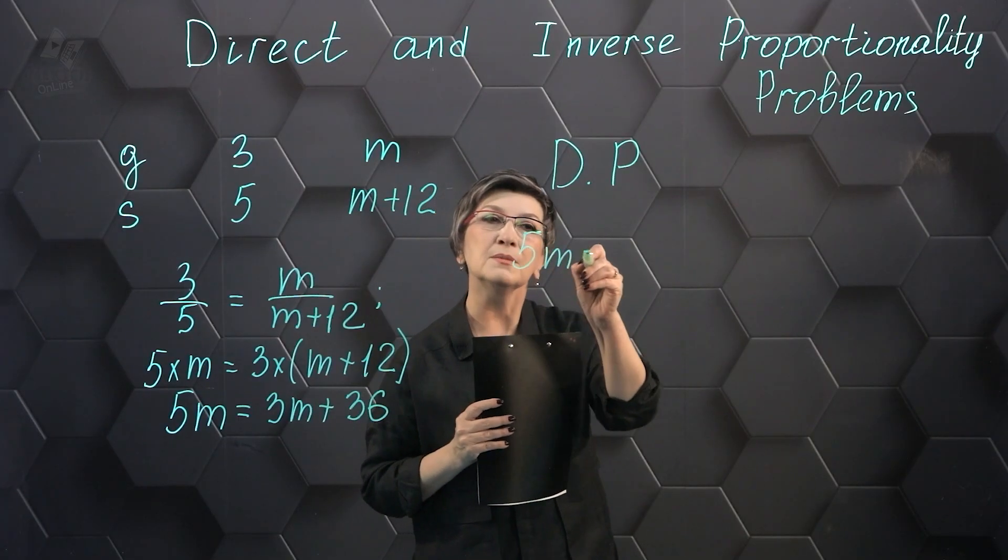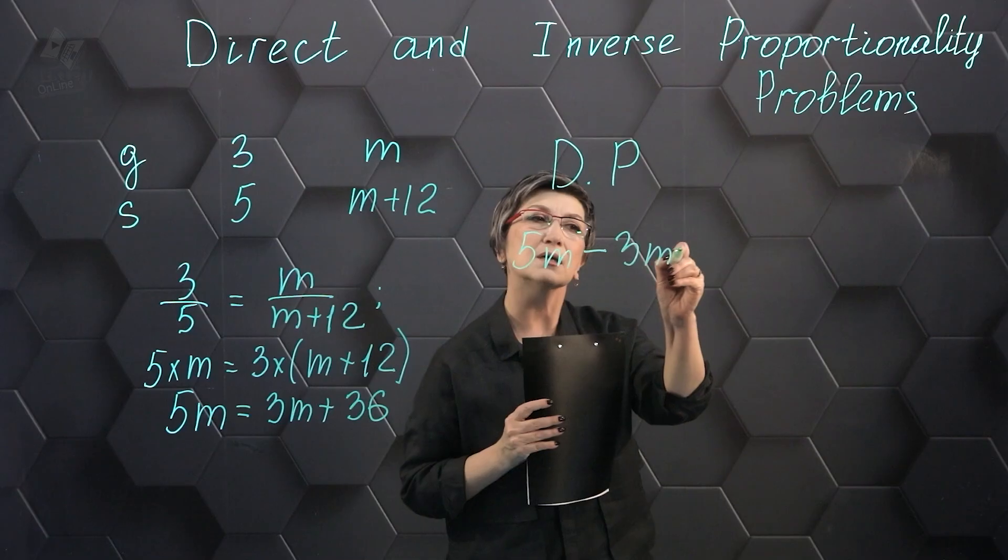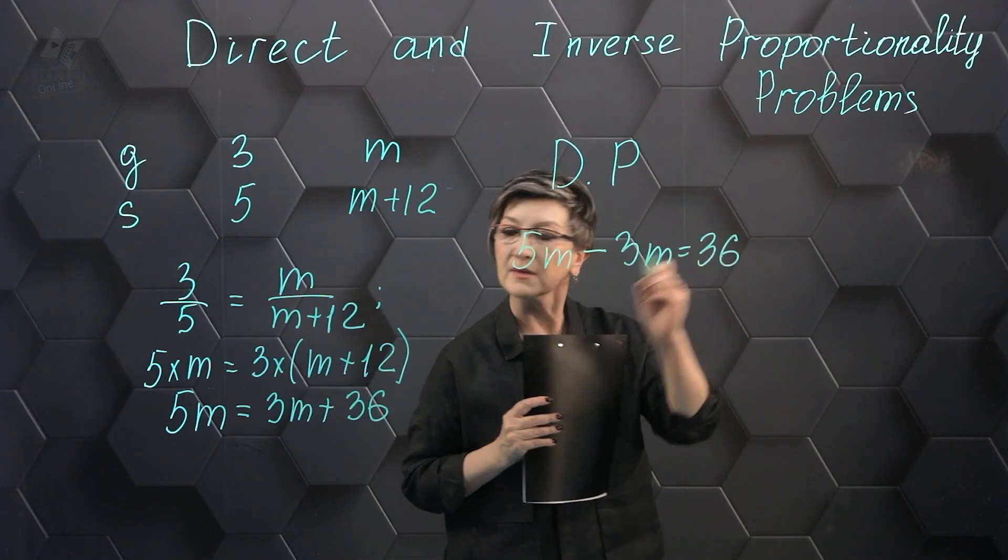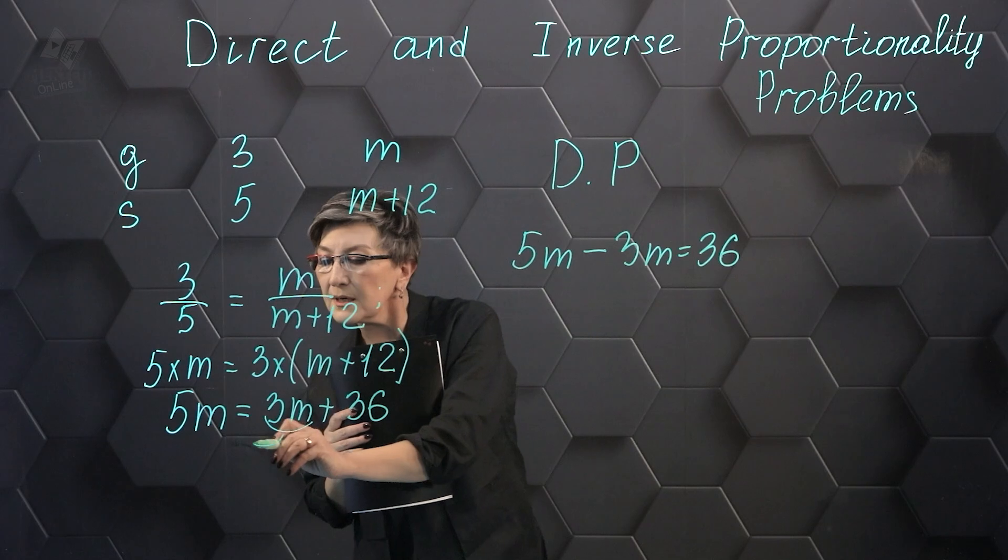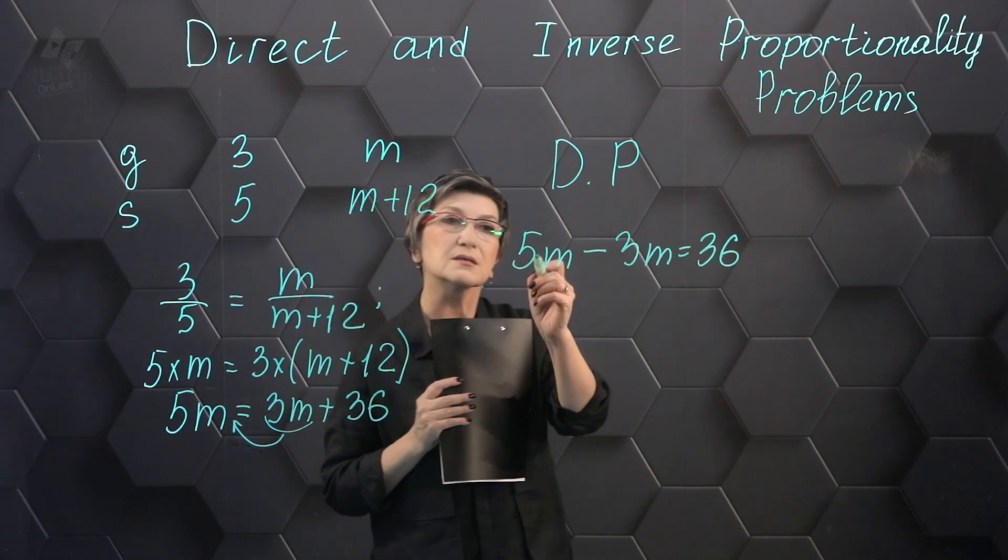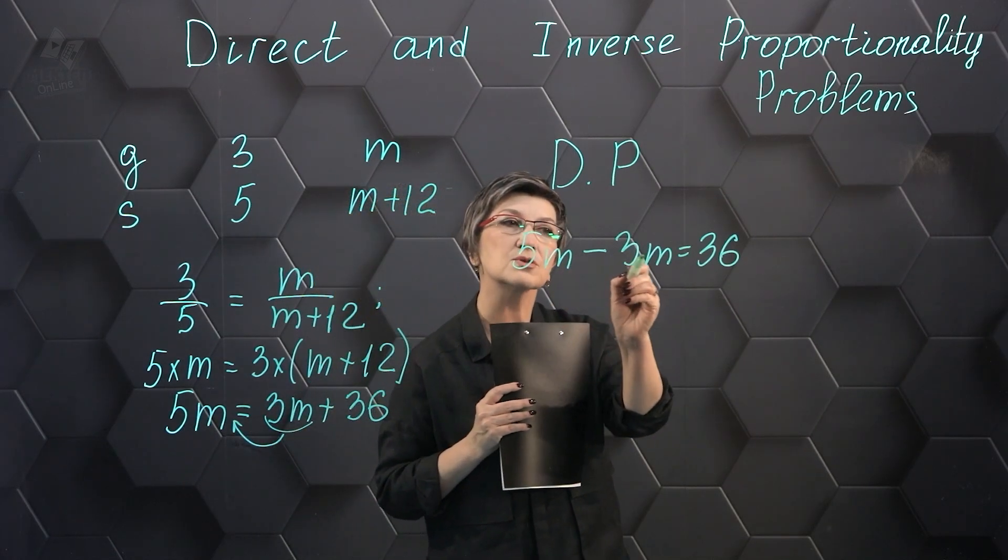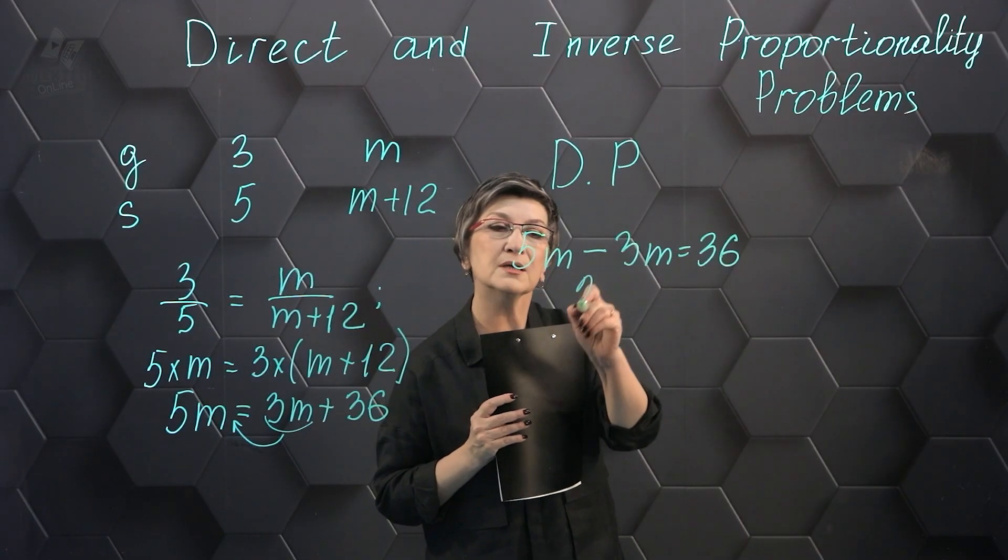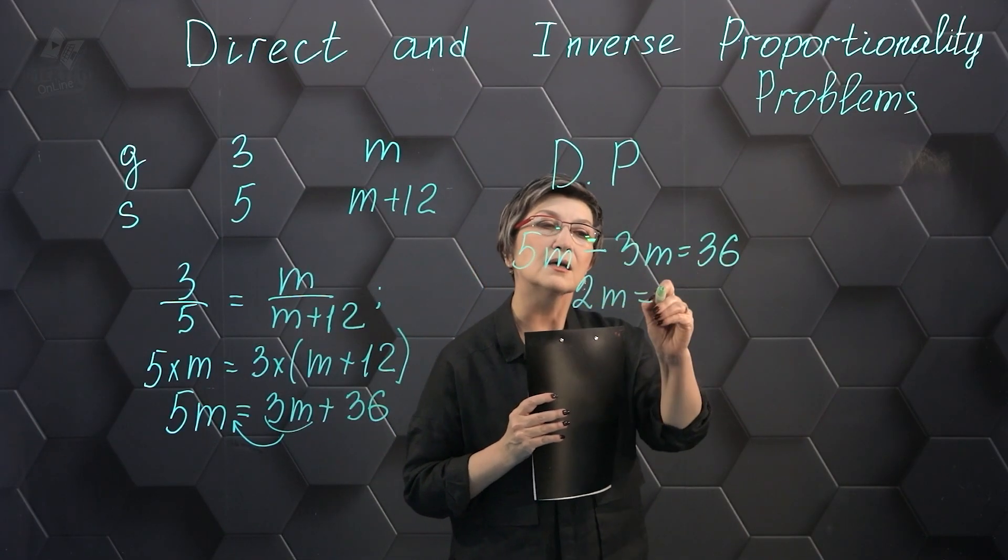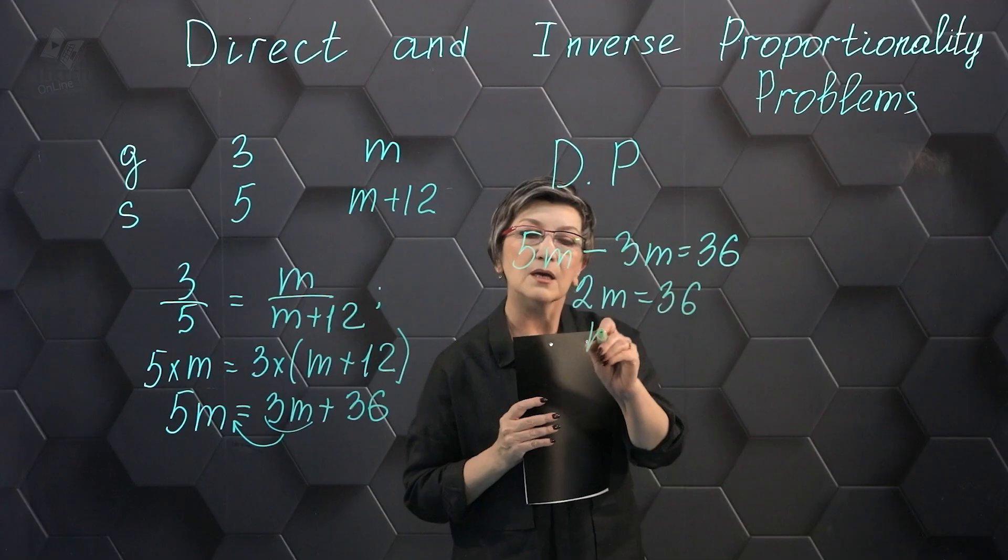5M minus 3M equals 36. I move the 3Ms from the right side to the left side. The result is 5M minus 3M equals 36. And 5M minus 3M, which is 2M, equals 36. M equals 18.